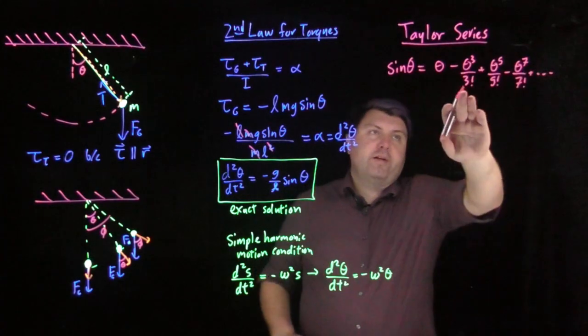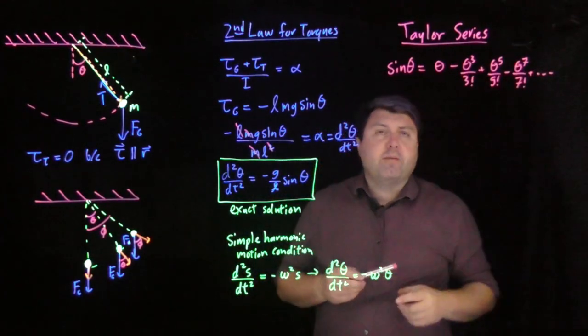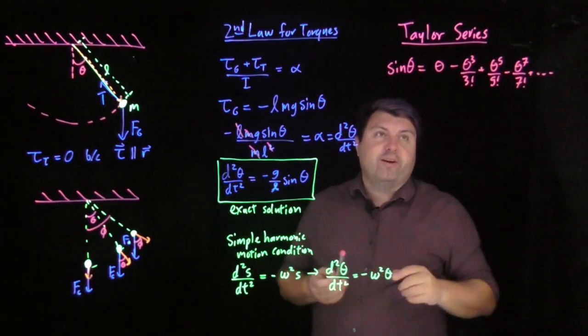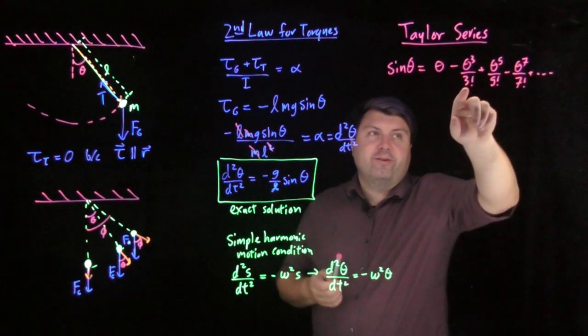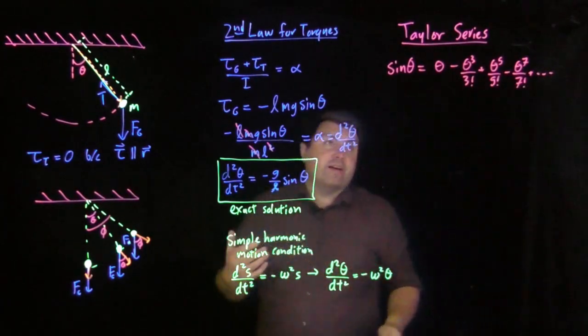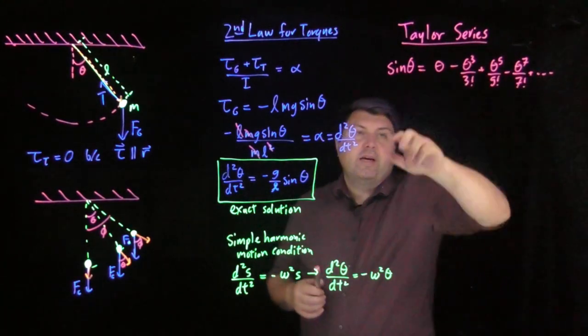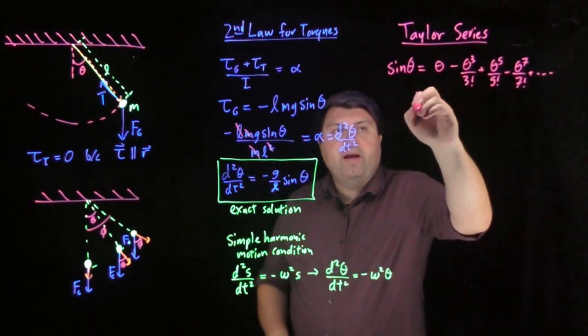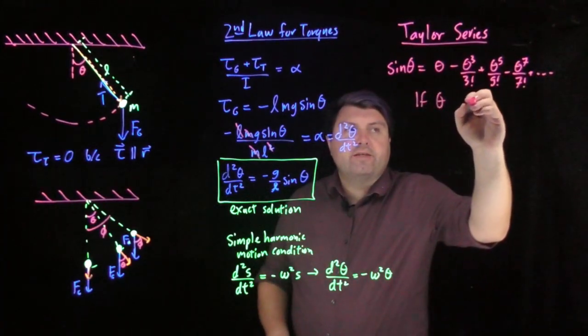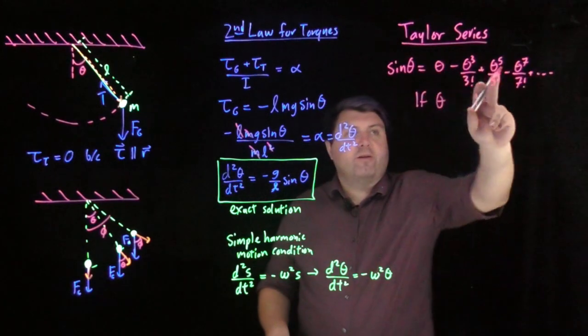So what we might notice is if we know the factorial series, this factorial jumps up absolutely hugely very quickly. This three factorial is six, this five factorial is 120, this seven factorial is well over a thousand. So this bottom part grows, and if our theta is less than one, then this part is actually going to get smaller and smaller.